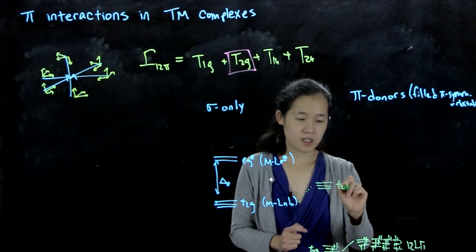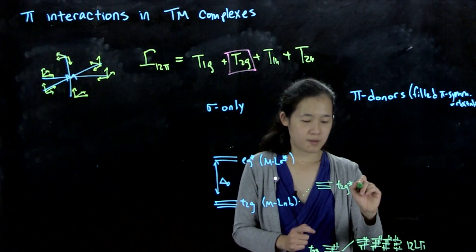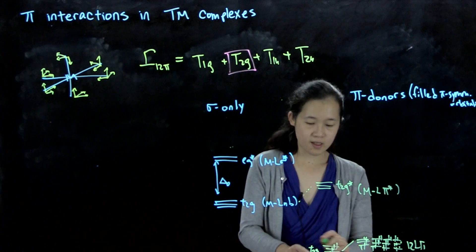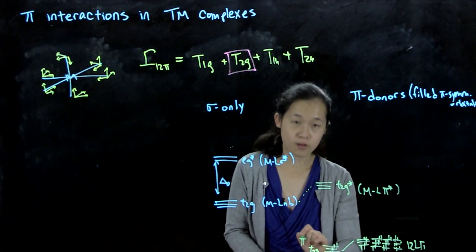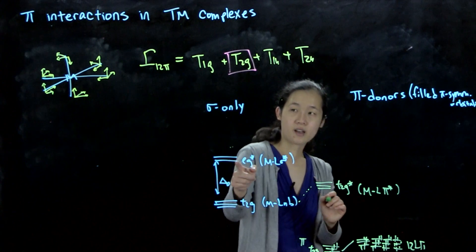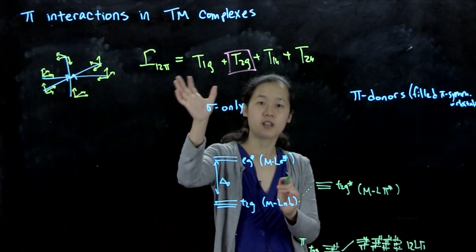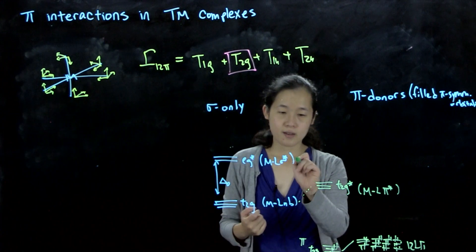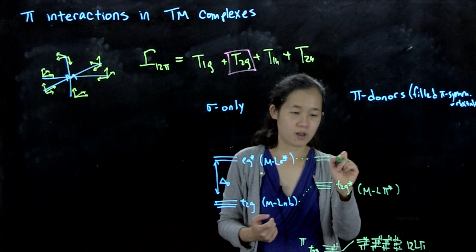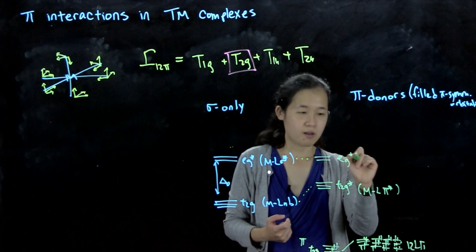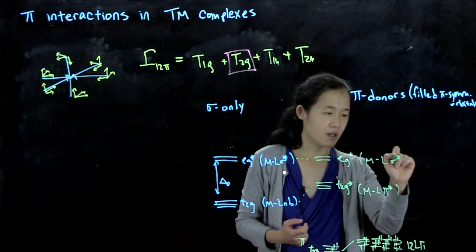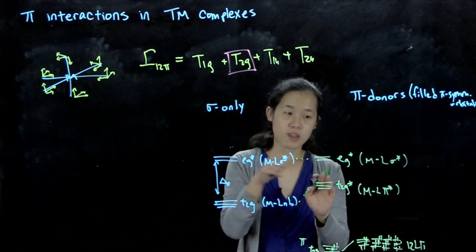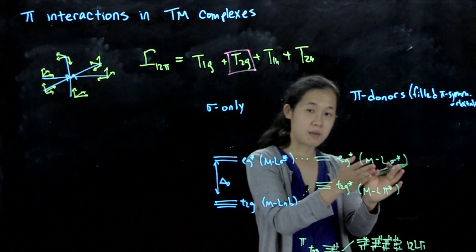This becomes T2G star. So this becomes ML pi-star. This was ML pi over here. And then our EG star, since the pi orbitals of the ligands don't have an EG SALC, there's no change. So this will remain up here. Therefore, EG star ML sigma star.